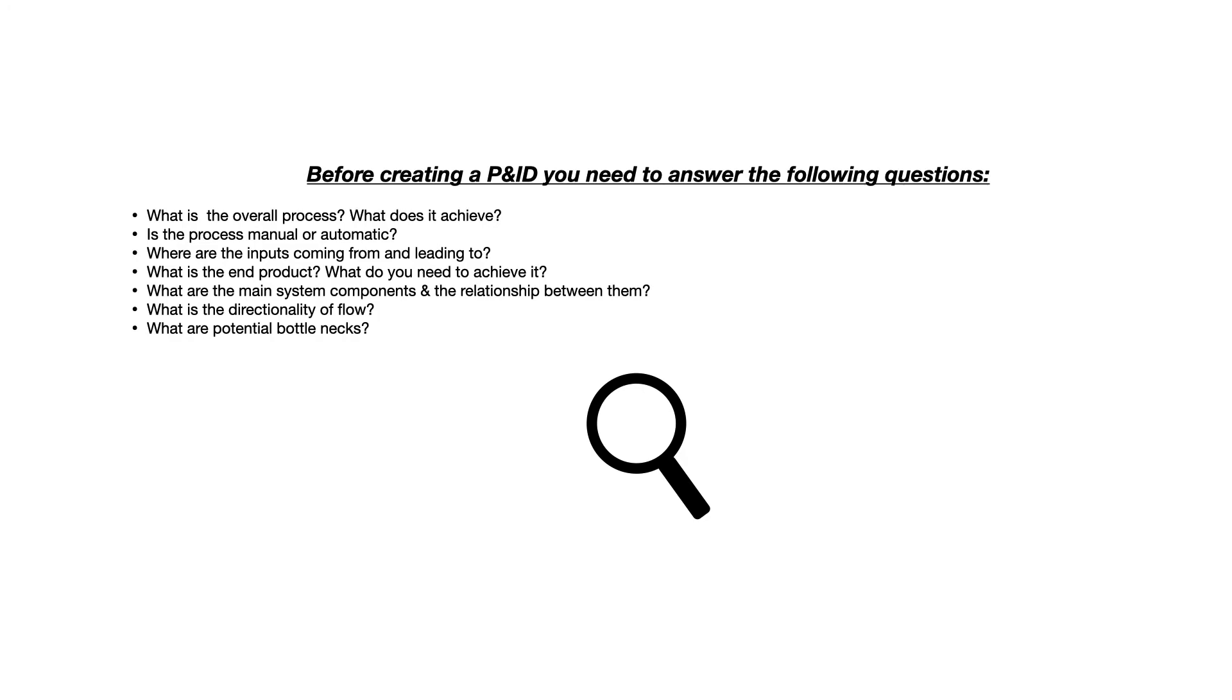So before creating a P&ID from scratch, you need to answer a few questions. What is the overall process? What does it achieve? So for example, a compressed air system - you might have an air compressor for a building that supplies air out to the shop for the technicians to use to perform their job.